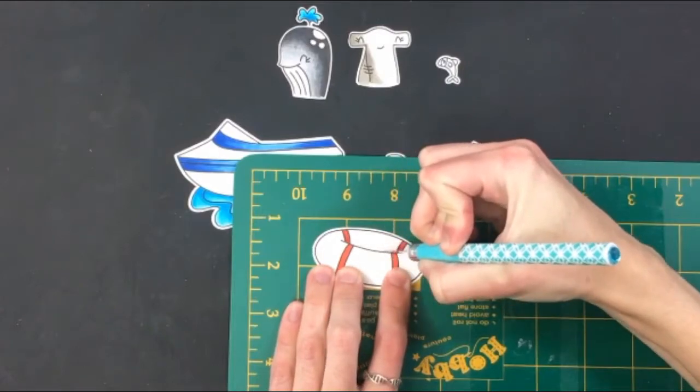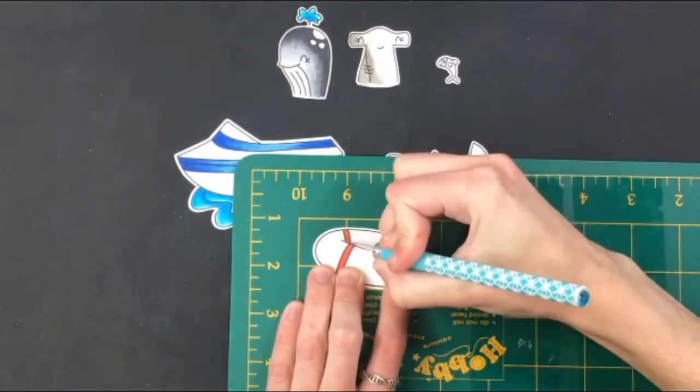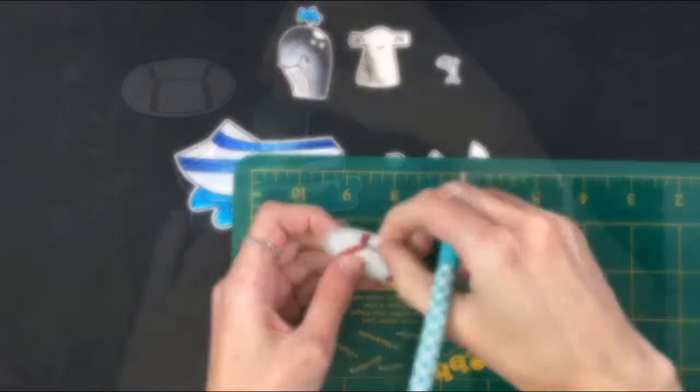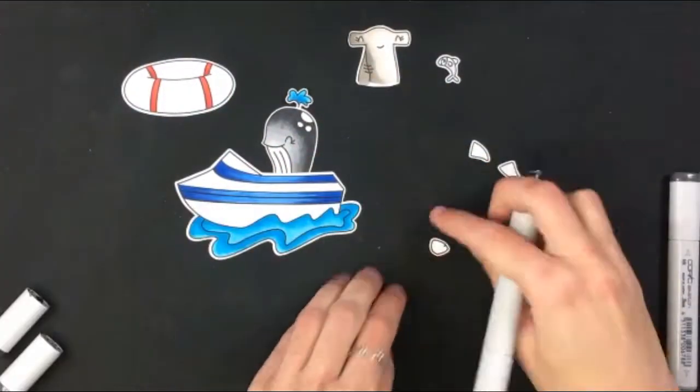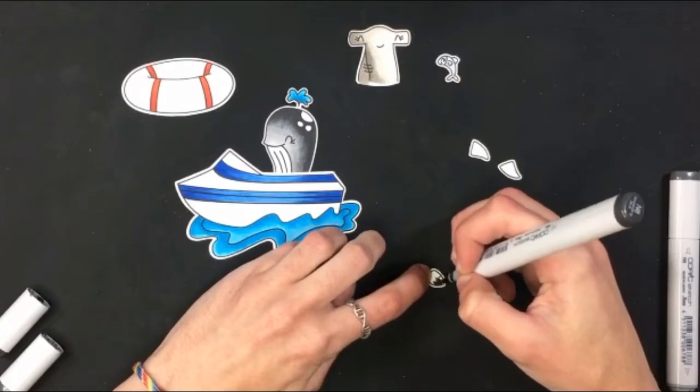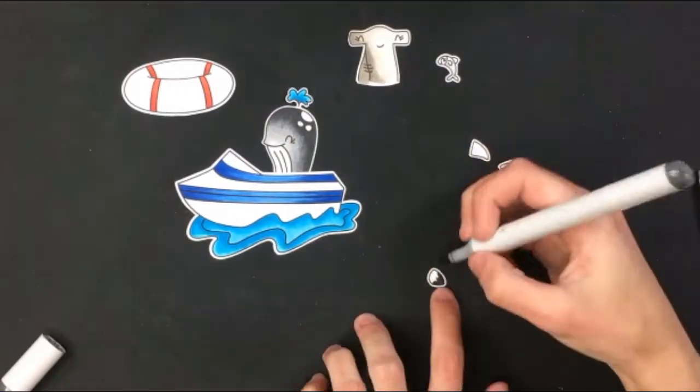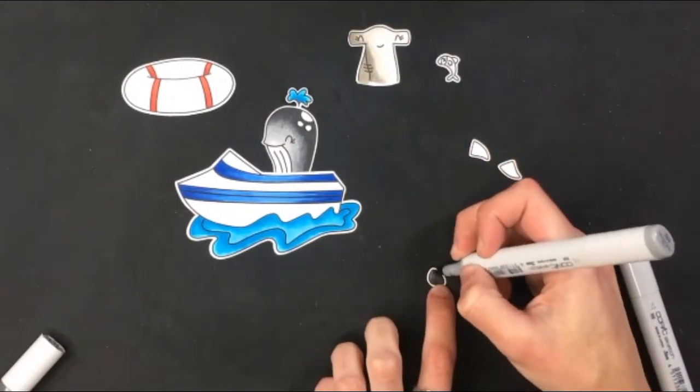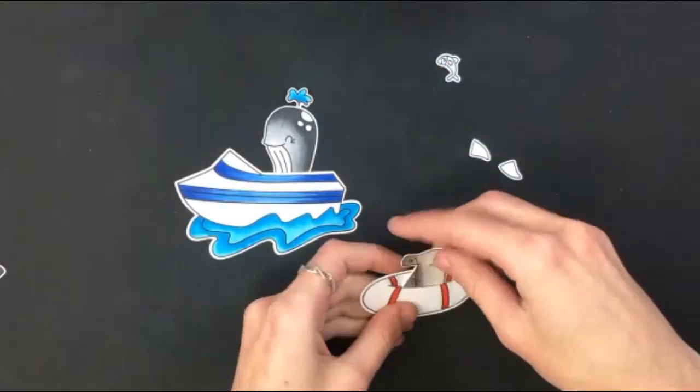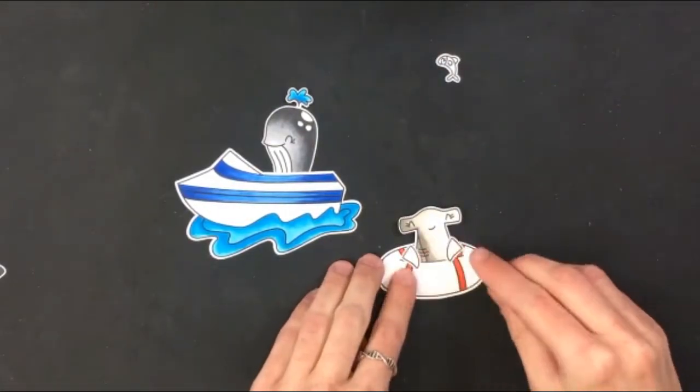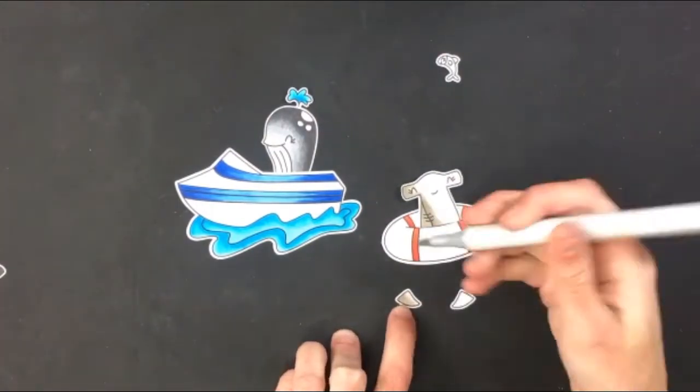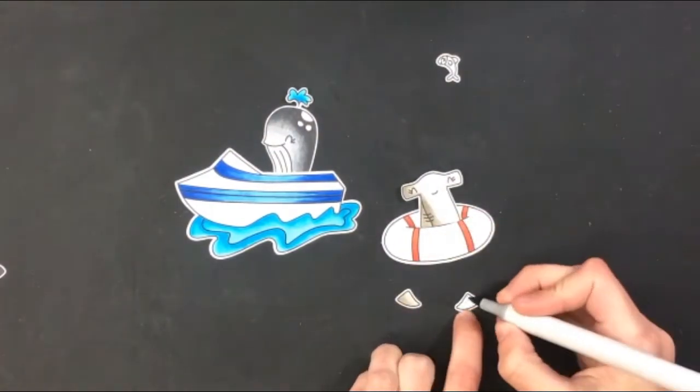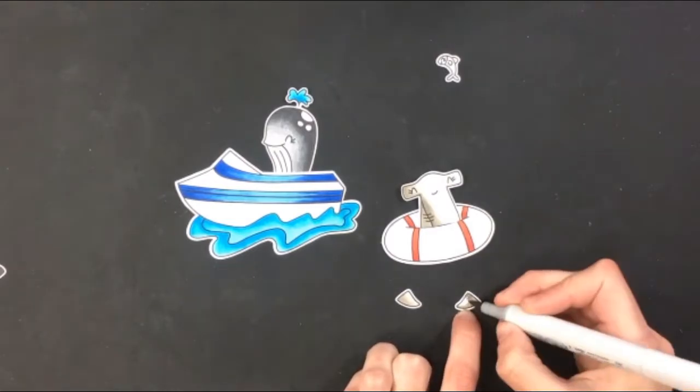Once I have fussy cut those out I am coming in with my X-Acto knife just to cut a line in that inner tube so we can stick our little shark in there. Here is me deciding finally where my little fins are going to go. The whale was going to have one of his fins hanging over the boat edge so I added shading to that and then I set up my little hammerhead fins how I wanted them and shaded them.